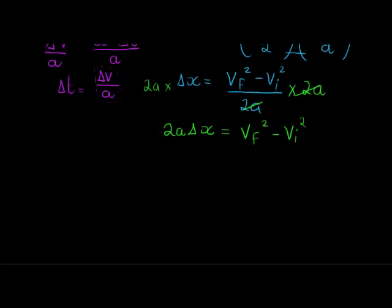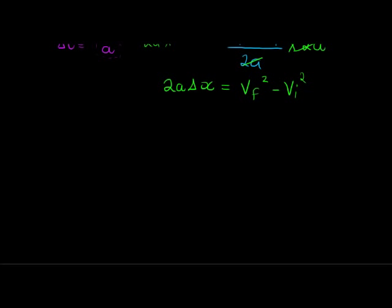And now just the most common way in which this is represented, or which you will find on your formula sheets, is when I actually go and add the vi squared on both sides. And then my final expression and final formula is that the future velocity squared is equal to the initial velocity squared plus 2 times the acceleration multiplied by the change in displacement. And there we go. We've derived all of the formulas. I hope you enjoyed it as much as I did.